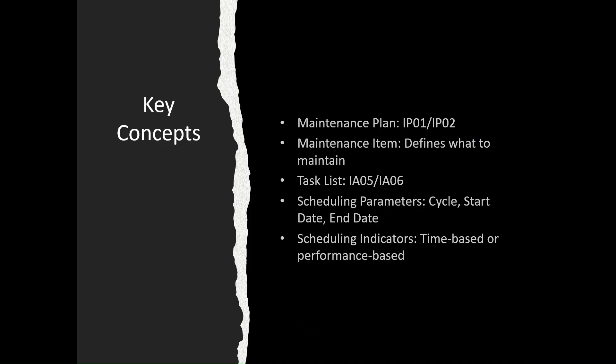The key concepts include: maintenance plans created through transactions ip01 and ip02; maintenance items, which define what activities we want to maintain; task lists defined through IA05 and IA06; scheduling parameters such as cycle start date and end date; and scheduling indicators that determine whether maintenance is performed on a time basis or performance basis.